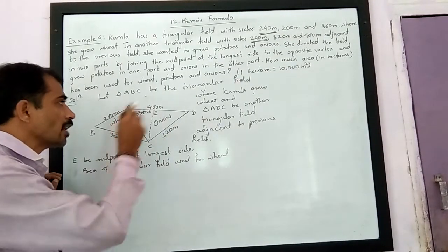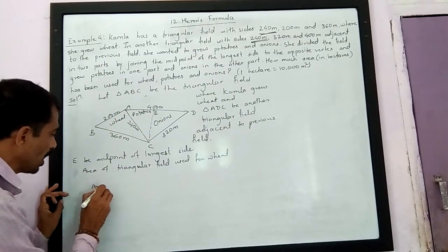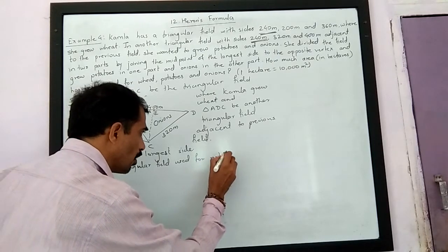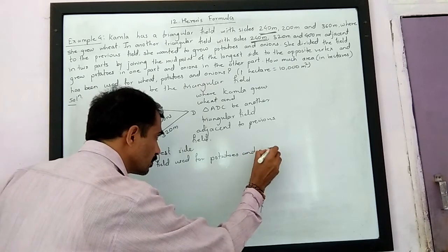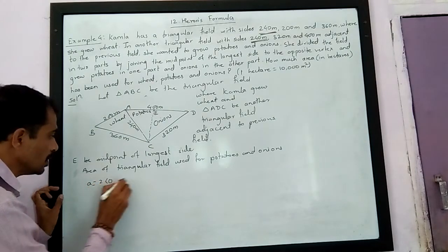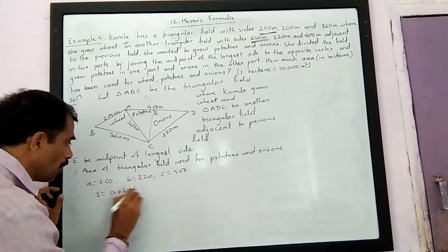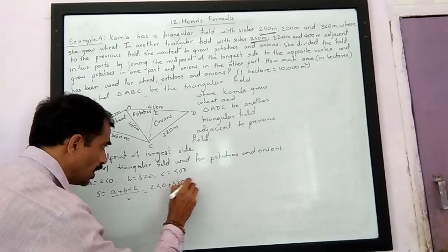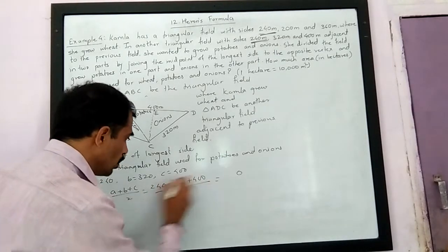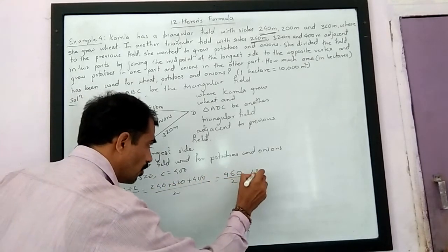Now let us find the area of the other triangular field used for potatoes and onions. Here, let A equal to 240, B equal to 320, and C equal to 400. So S is equal to (A plus B plus C) upon 2, which is (240 plus 320 plus 400) upon 2, equal to 960 upon 2, that is equal to 480 meters.